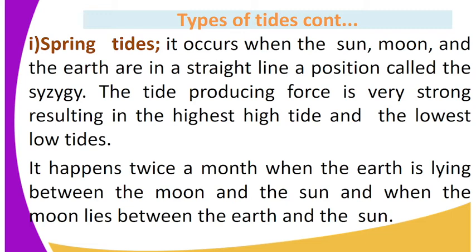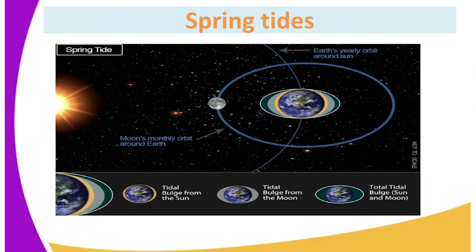Spring tides happen twice a month: when the earth is lying between the moon and the sun, and when the moon lies between the earth and the sun. You can see the position of the earth, the moon, and also the sun.